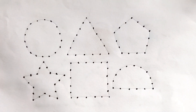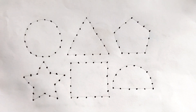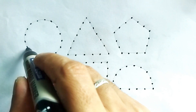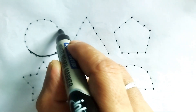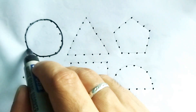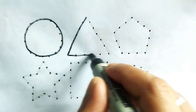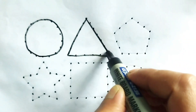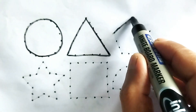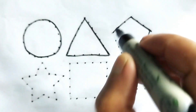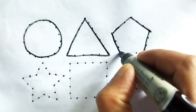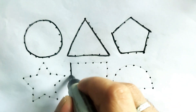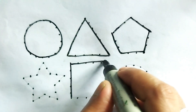Hey kids, how are you? Are you ready for learning the shapes? Different types of shapes and different types of colors. Let's start. This is a circle, this is a triangle, pentagon, square.